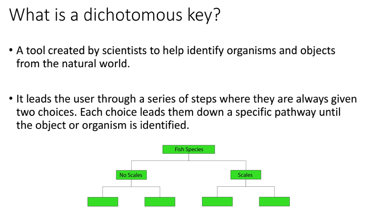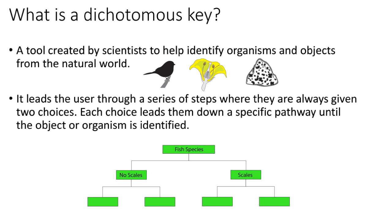A dichotomous key is a tool created by scientists to help identify organisms from the natural world, such as birds, flowers, insects, trees, fish, bacteria, or any living thing you can think of. It's also used to help identify objects from the natural world, such as rocks or minerals.